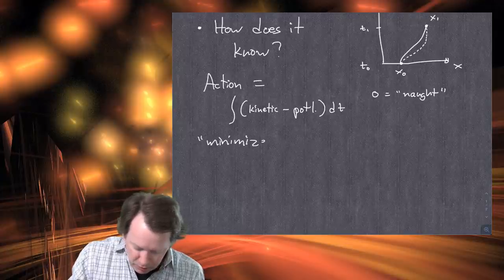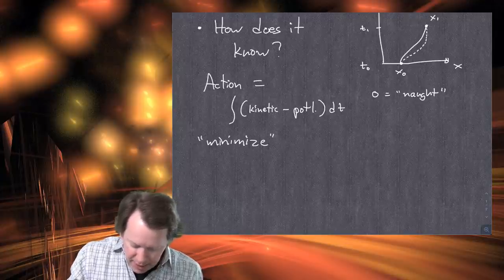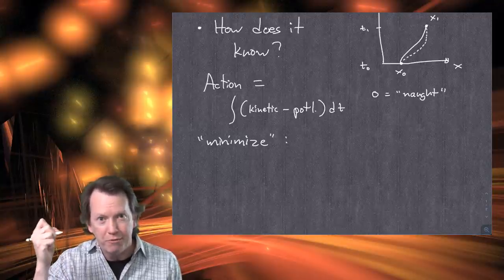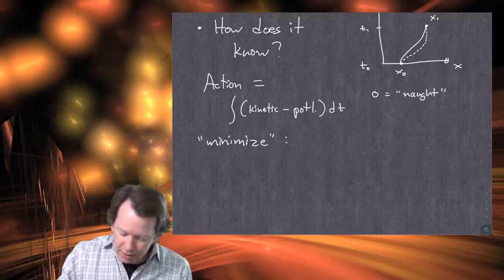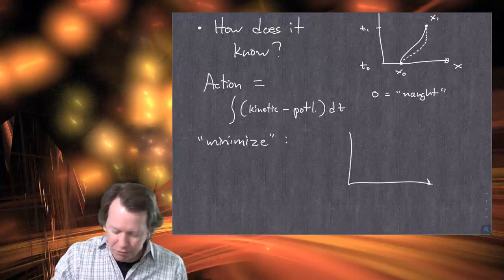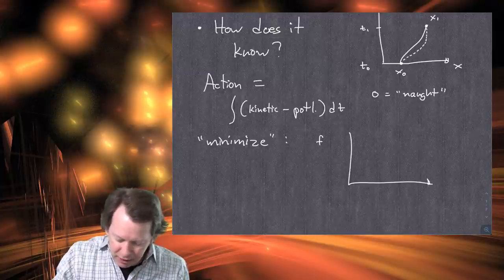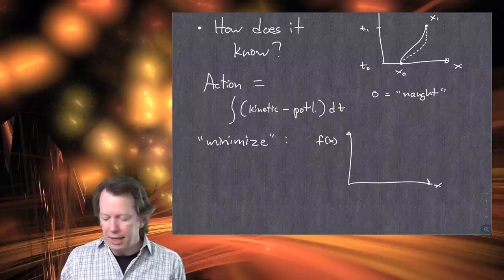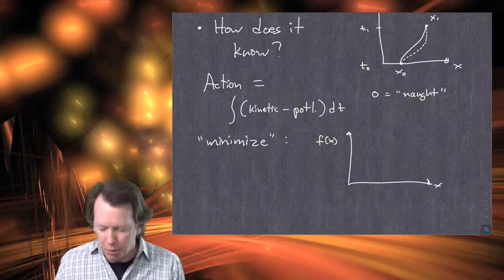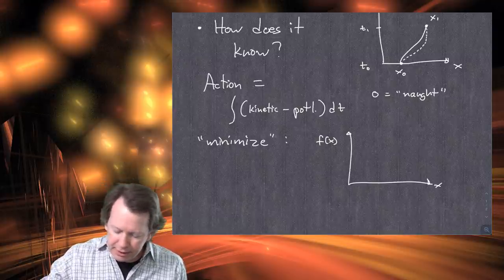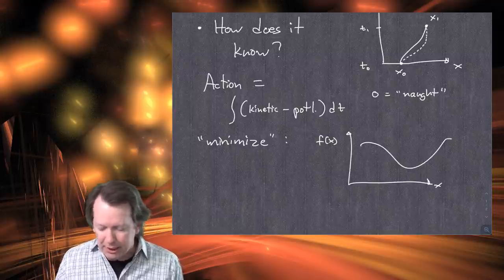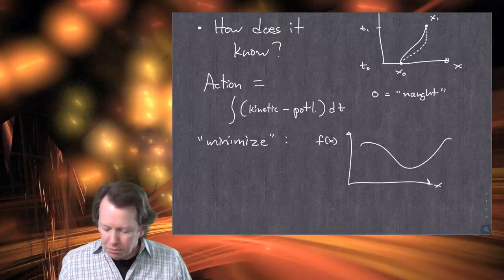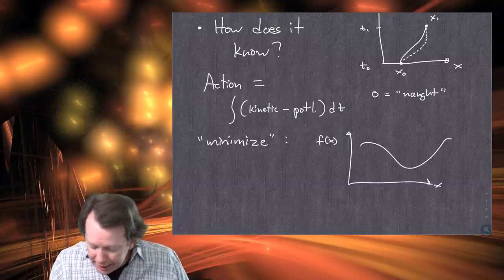The particle doesn't think about every single path ahead of time and then choose the path of least action. There is a way the particle moves, and that way can be specified by saying: of all the paths, it is the one with the least action. Minimizing the action gives us the same path as the Newtonian way of doing things starting with F=ma. So let me talk about minimizing — what does it mean to minimize something? Imagine a function f of x.